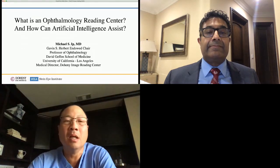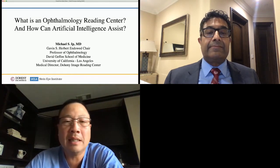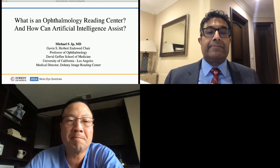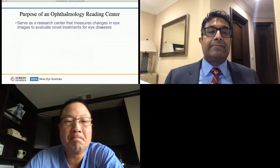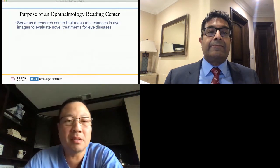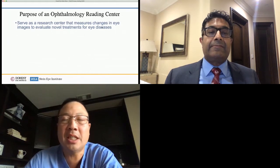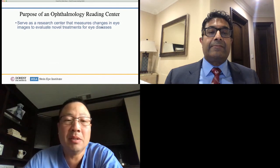You've asked me to speak on: what is an ophthalmology reading center, and how can artificial intelligence assist? The purpose of an ophthalmology reading center — as Vas alluded to in his talk — is to serve as a research resource that measures changes in eye images to evaluate novel treatments for eye disease. For example, if a drug company wanted to test a drug, you would have to analyze images of the eye.